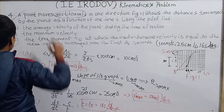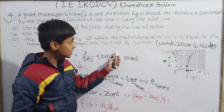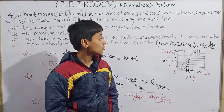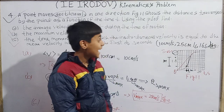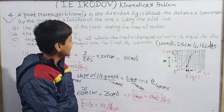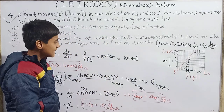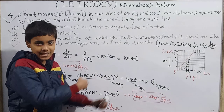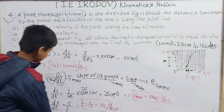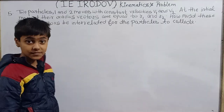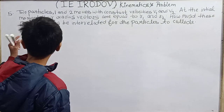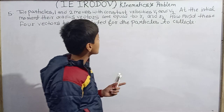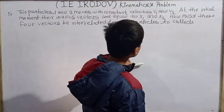So all three answers for question 4 are: (a) 10 cm/s average velocity; (b) 25 cm/s maximum velocity; (c) t₀ equals 16 seconds. Question 4 is complete. Now let's move to our next question, question 5.